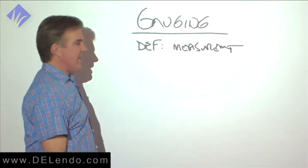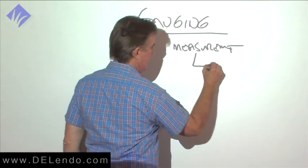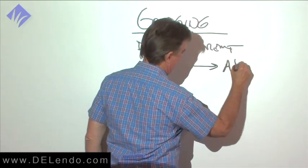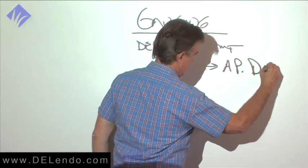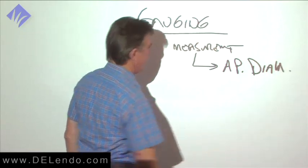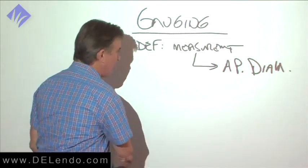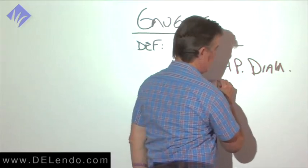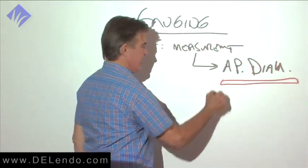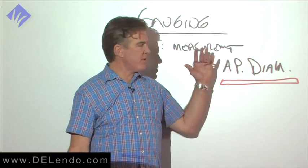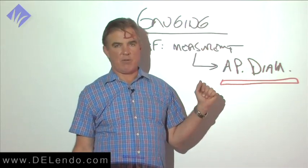When we gauge the terminus for root canal, we're measuring the apical diameter. It's remarkable to me that virtually all techniques taught to date in the world, with all the different instruments, almost none of them talk about apical gauging.